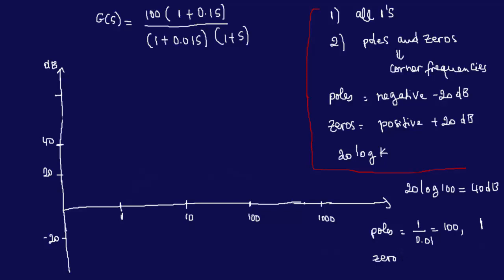Zeros are at the numerator. So we have 1 over 0.1, and this is obviously a 10. So we have two poles and one zero. We can circle them out. We have a pole here and a pole here — these are our corner frequencies. And we have a zero. Let me use a different color for the zeros — let me use green. So zeros are green and yellow is a pole.